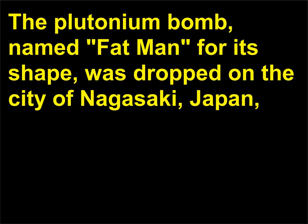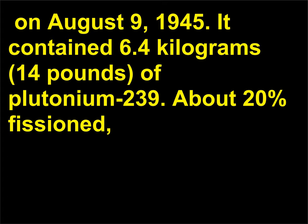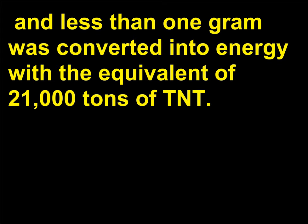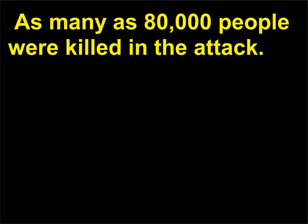The plutonium bomb, named Fat Man for its shape, was dropped on the city of Nagasaki, Japan on August 9, 1945. It contained 6.4 kilograms (14 pounds) of plutonium-239, about 20% of which fissioned. Less than one gram was converted into energy with the equivalent of 21,000 tons of TNT. As many as 80,000 people were killed in the attack.